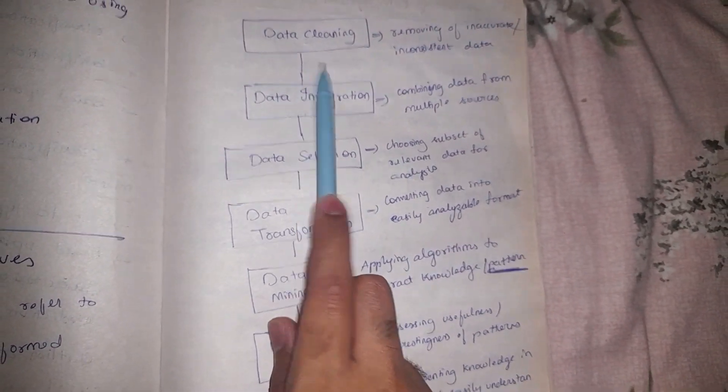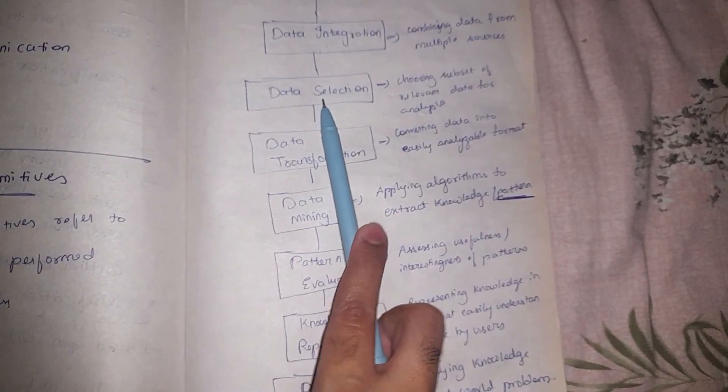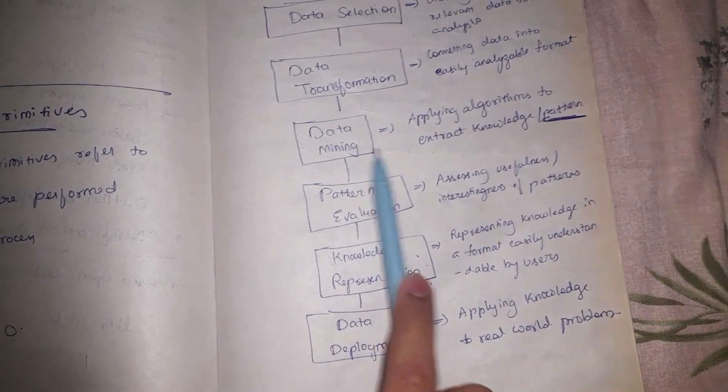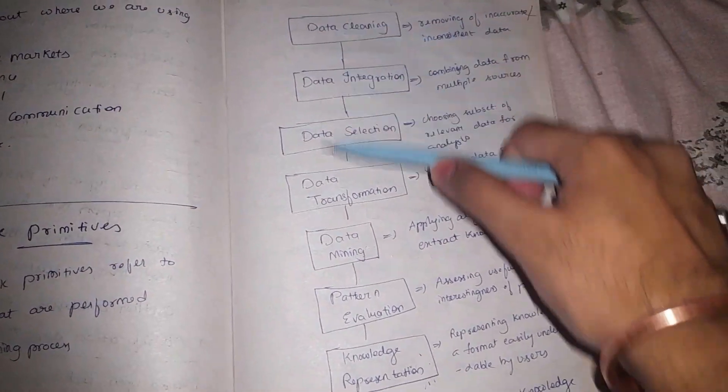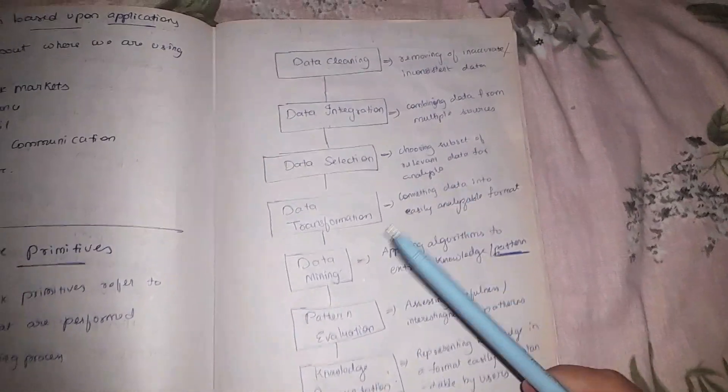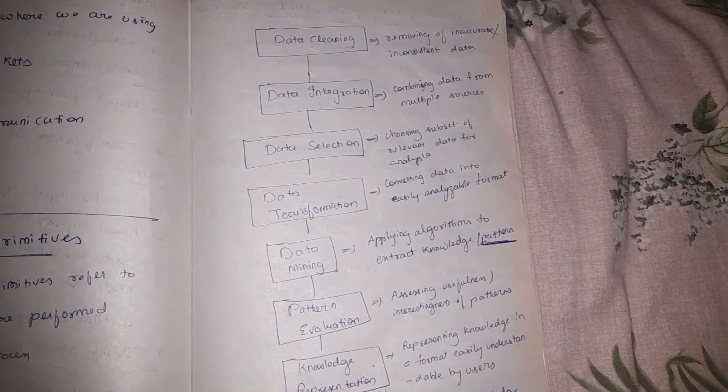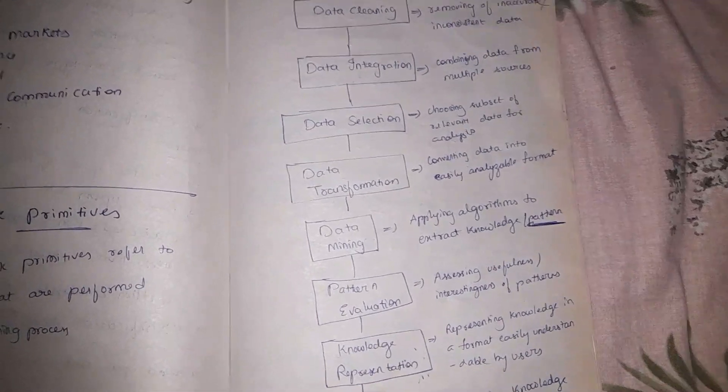So these are the task primitives of data mining: data cleaning, data integration, data selection, data transformation, data mining, pattern evaluation, and knowledge representation. If you understand all these terms then you can write about data mining task primitives pretty easily. That is it guys for this video, I hope you liked it.